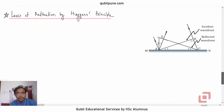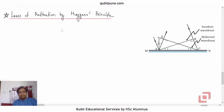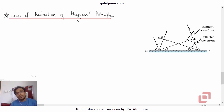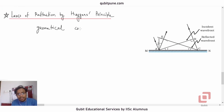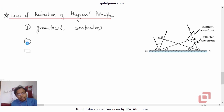I will make a few points here about the proofs. Both the reflection and refraction laws, when proved by Huygens' principle, make use of geometry — so essentially these proofs are geometrical constructions. When proving the laws of reflection, we make use of congruence of triangles.